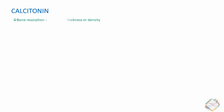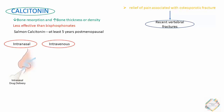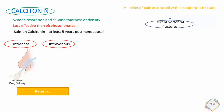Calcitonin acts by reducing bone resorption and increasing bone density, but is less effective than bisphosphonates. Salmon calcitonin is indicated for treatment of osteoporosis in women at least five years post-menopausal. A unique property of calcitonin is relief of pain associated with osteoporotic fractures, making it beneficial in patients with recent vertebral fracture. It is available in intranasal and parenteral formulations, though parenteral is rarely used. Common adverse effects of intranasal administration include rhinitis and other nasal symptoms. It is generally reserved for patients intolerant of other osteoporosis drugs due to potential increased malignancy risk.